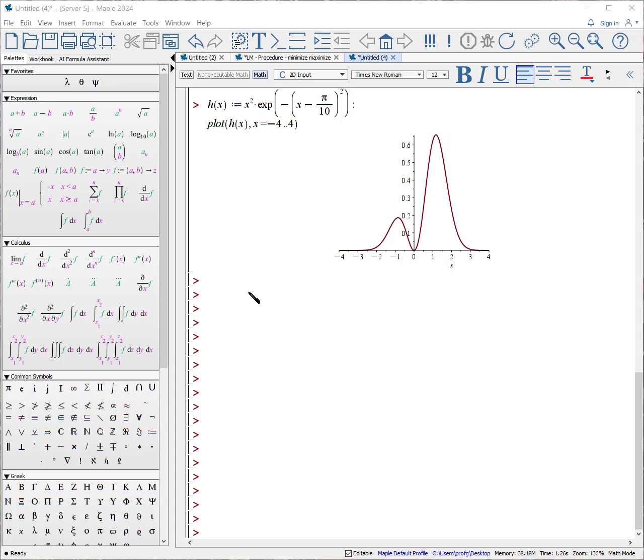Again, if you use maximize, let's look for h_max colon equals maximize of h(x). And it returns that value.